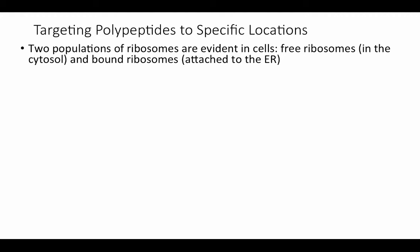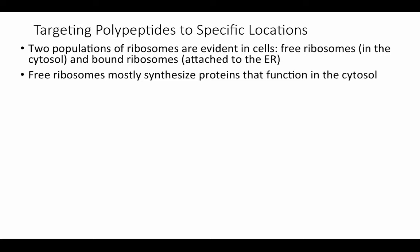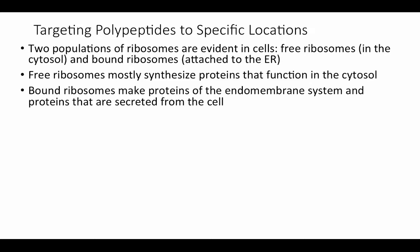How are polypeptides targeted to their specific location? There are two populations of ribosomes in cells: free ribosomes that are free-floating in the cytosol, and ribosomes bound to the endoplasmic reticulum — the rough ER. Free ribosomes mostly synthesize proteins that function nearby in the cytoplasm. Bound ribosomes primarily make proteins of the endomembrane system — proteins that are part of cell membrane surfaces or proteins that are going to be secreted from the cell by exocytosis.